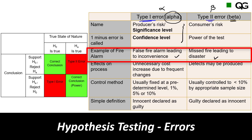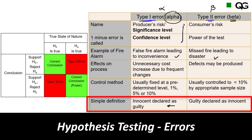In a court example, when an innocent person is declared guilty, that is a Type 1 error — the person was innocent but the court decided they were guilty. Courts do not want to commit this error; they don't want to punish an innocent person, so they keep very tight control over it. Type 2 error in court is when a guilty person is declared innocent because there was not enough proof — courts may tolerate Type 2 error more, but not Type 1.